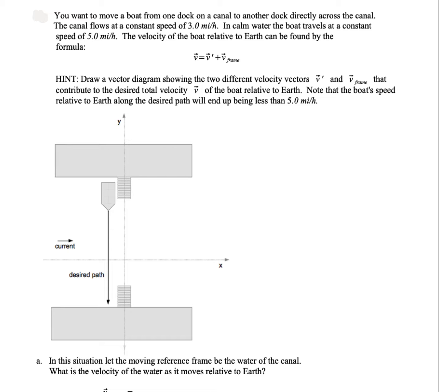You want to move a boat from one dock on a canal to another dock directly across the canal. The desired path is to go straight down from one dock to the other, but the canal flows with a speed of 3 miles per hour. In calm water, your boat can travel using its motor at a speed of 5 miles per hour.